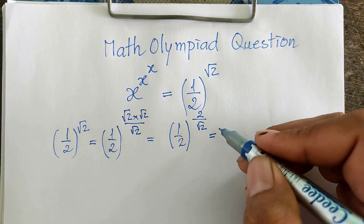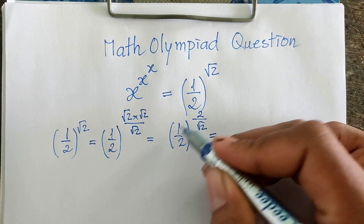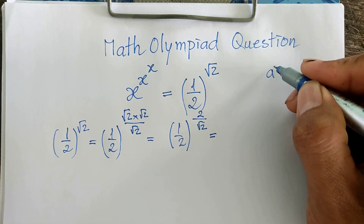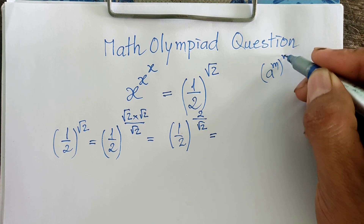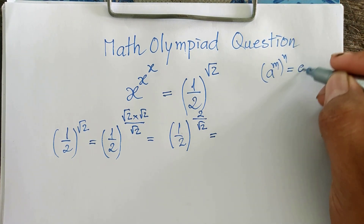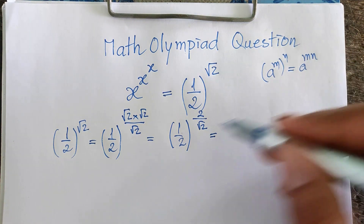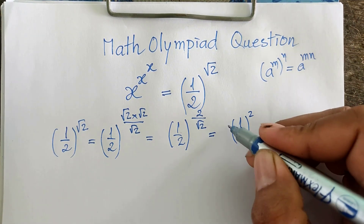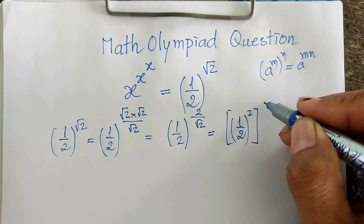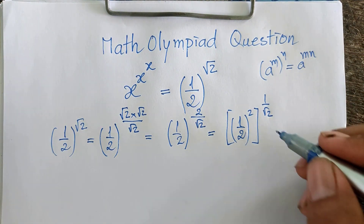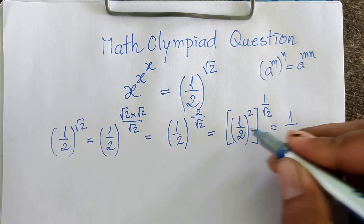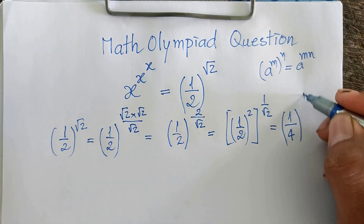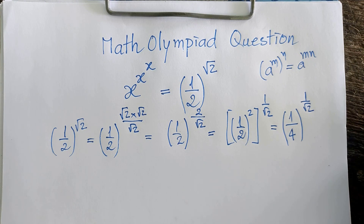And equal to this — we use the rule that a^(m·n) equals (a^m)^n. So I can write it as (1 divided by 2)^2, all to the power of 1 divided by √2. And it's equal to 1 divided by 4 — since 2 squared is 4 — to the power of 1 divided by 2.